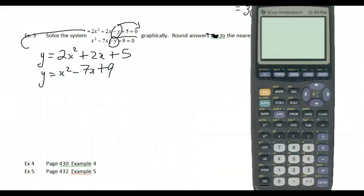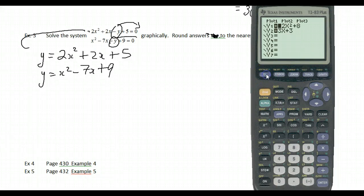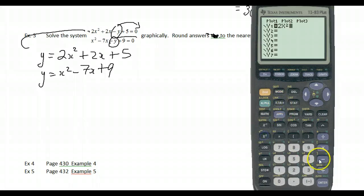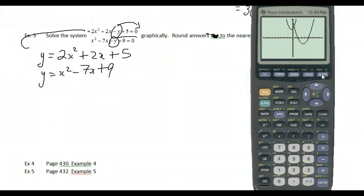Enter those into the graphing calculator. Go to y equals, clear out what's there, enter 2x² + 2x + 5 as y1, and x² − 7x + 9 as y2, then hit graph. There's one equation, there's the other.